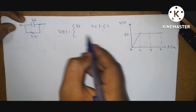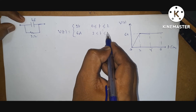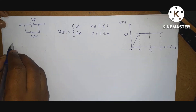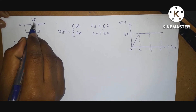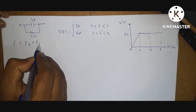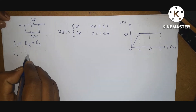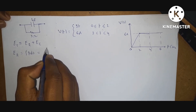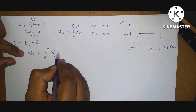From 2 to 4 seconds, the voltage is 6 volts. Now, the question asks to determine the energy absorbed. Energy absorbed means both: energy absorbed by the resistor Er, and energy absorbed by the capacitor Ec. So total energy is Er plus Ec. What is Er? Er is equal to integral of P·dt, from 0 to 4 seconds: integral of V² by R dt.